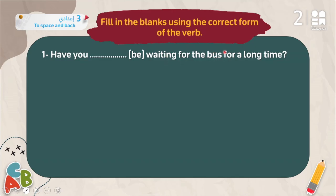Exercise: Fill in the blanks using the correct form of the verb. Number one: 'Have you ___ waiting for the bus for a long time?' We have 'waiting' with '-ing', so this is the present perfect continuous. The rule is have/has + been + ing, so the answer is: 'Have you been waiting?'